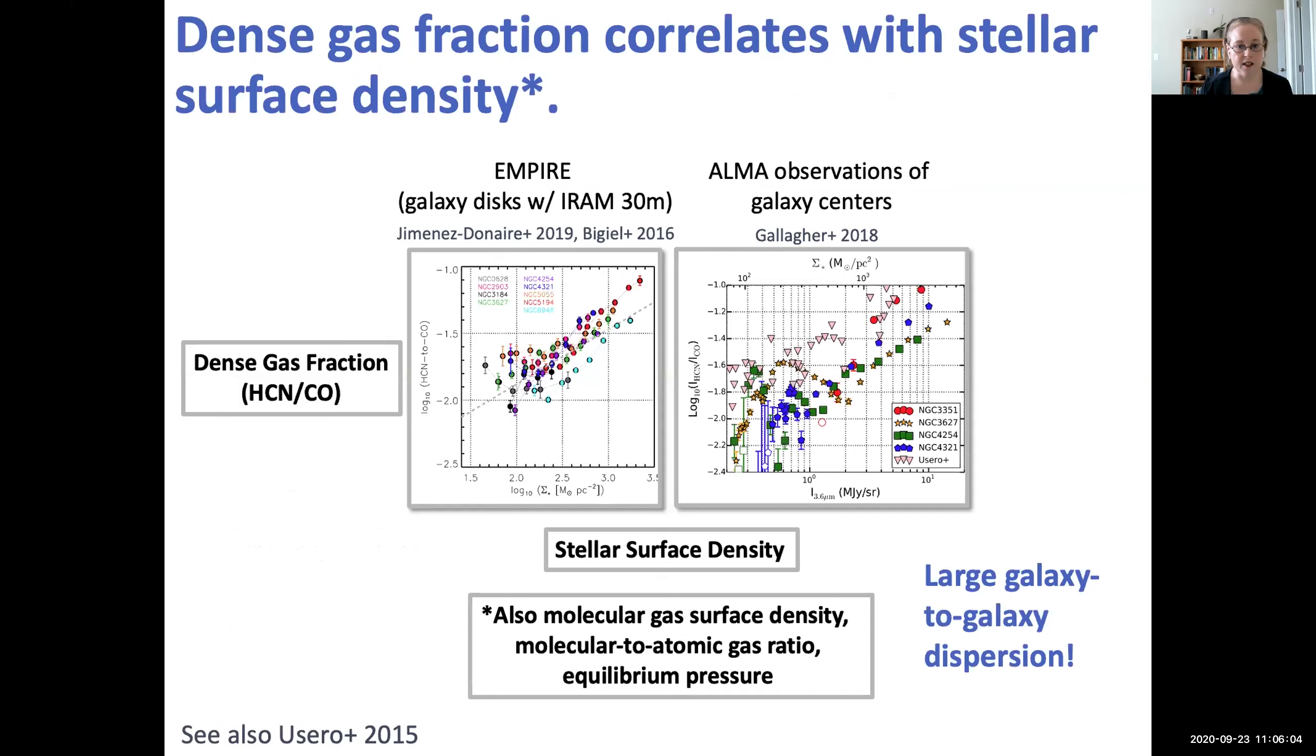So I'd like to start off talking a little bit about what we've learned from EMPIRE and from the ALMA observations. And what we've learned is that dense gas fraction correlates with stellar surface density. So as you go towards the center of galaxies where you have higher stellar surface density, the dense gas fraction also increases. But a really important thing to note is that there's a really large galaxy to galaxy dispersion between these sources.